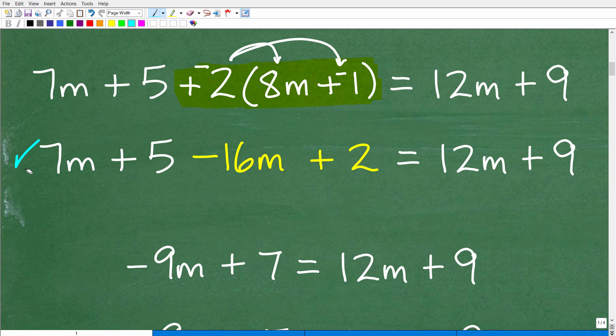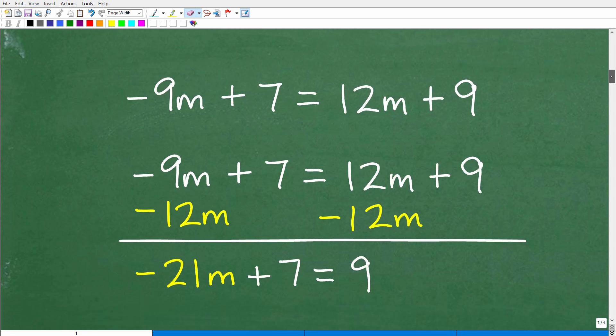So when I look around, I'm like, here's a 7m, here's a negative 16m. These are like terms because the variables are exactly the same. And then I have two numbers I can combine. So let's go ahead and do that now. So 7m minus 16m, we simply just add the coefficients, which is 7 plus a negative 16. That gives me negative 9m. And then 5 and 2, of course, is 7. So we're just playing clean up right here. So this is the result of cleaning up the left-hand side. The right-hand side, we just have a variable term and a number. So this is where we're at so far.